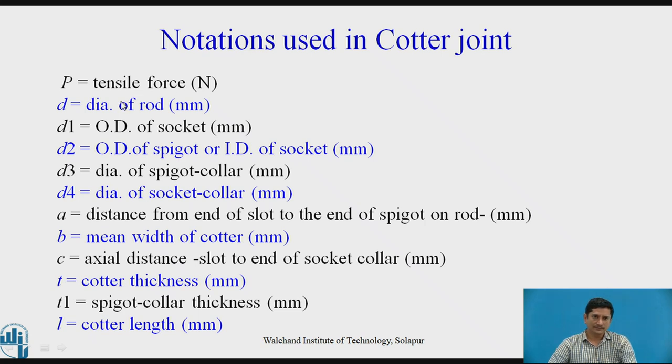This is the notation. P is the force. D is the diameter of rod. D1, D2, D3, D4 are the dimensions for the socket and spigot. We can see what is A, B, C. Then T is the thickness of the cotter and L is the cotter length.